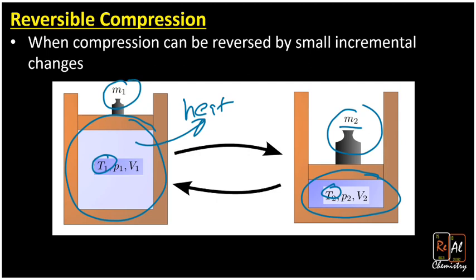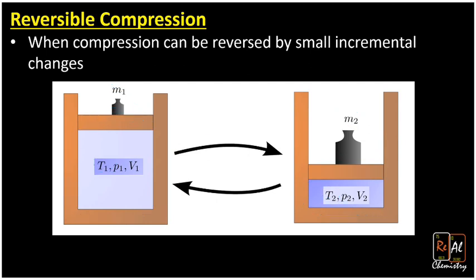So the reversible part means that the compression can be reversed by small incremental changes. What we're talking about there is that we're only going to allow mass 1 to change by very small amounts. Technically each time it increases by an infinitesimal amount of mass. And what that does is it allows us to go back and forth between these two states by these small changes and increments. And this gives us a nice idealized situation to calculate work and heat and enthalpy and internal energy. It turns out that by changing it really slowly, we actually minimize the amount of work we have to do to compress it. So this is going to represent the minimum amount of work to do that compression, or the exact amount of work if we do it reversibly.